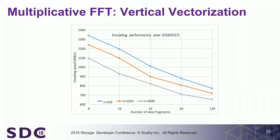This is the performance we get. Typically for N equals 256 symbols and 8 data fragments — so 248 erasure codes — we can encode on one core at nearly 1.4 gigabytes per second. Which is good. If you multi-thread on multiple cores, you can scale further, and with different parameters and different N values, you have different performance.